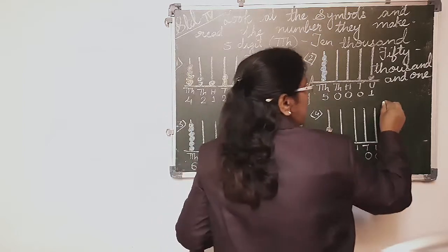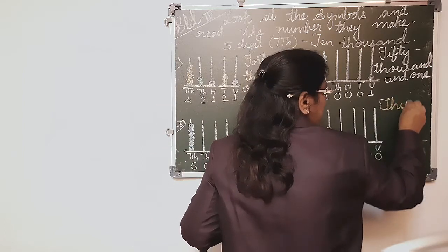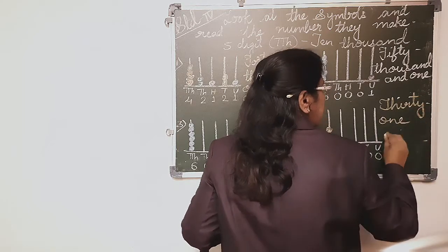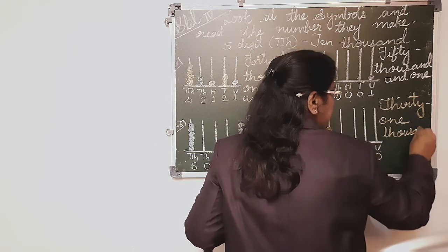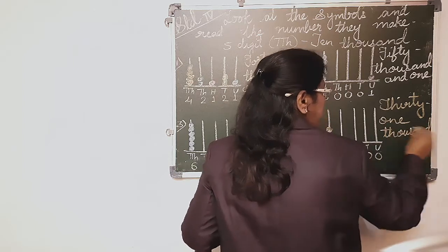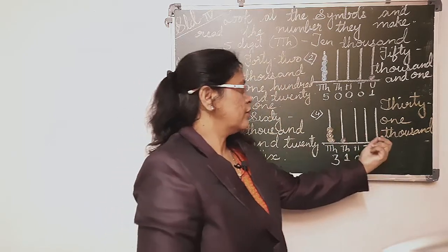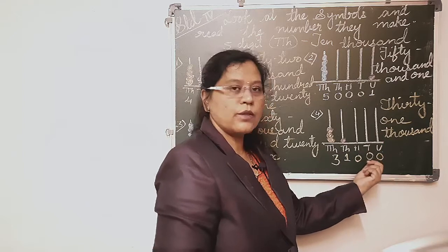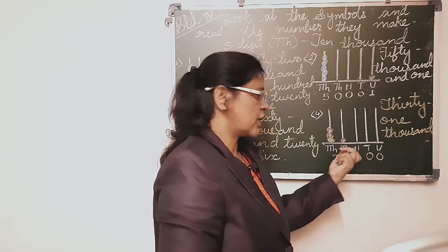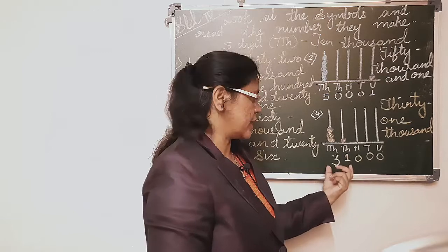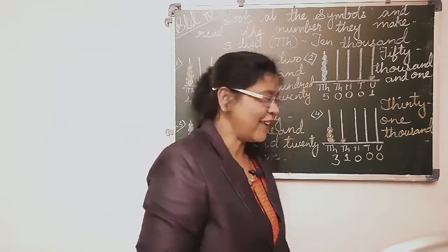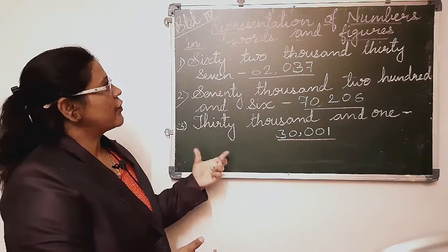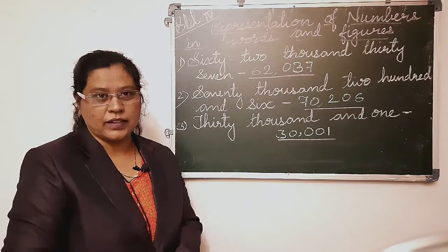We will write the number in words: thirty-one thousand. There is no units place, no tens, no hundreds — straight away the thousands and ten thousands place are there. So it is 31,000. You can look here at the representation of numbers in words and figures.